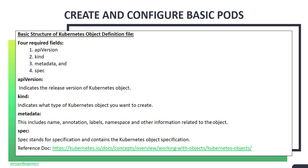These are the four required fields that should be present in the YAML file of any Kubernetes object you want to create. Those are API version, kind, metadata, and spec.